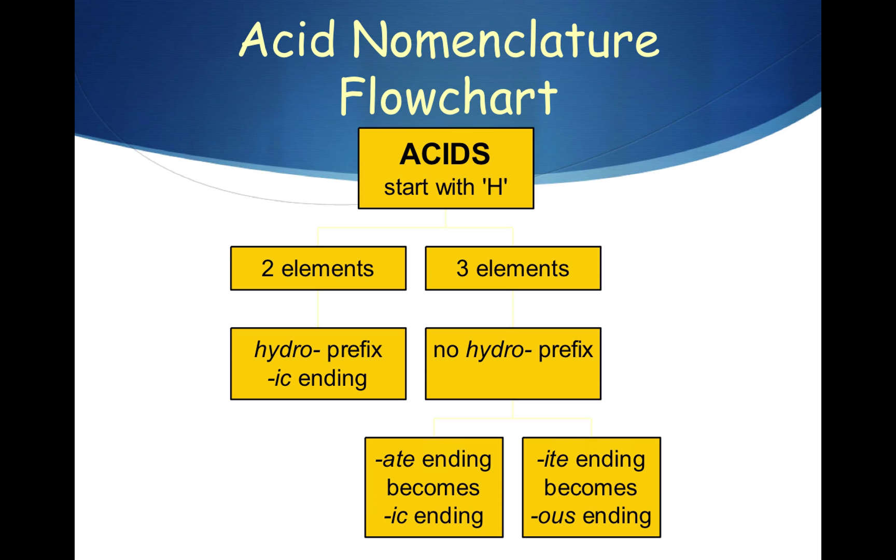Now, if the negative ion in the acid ends in -ate, then the -ate changes to -ic. That's how we get the names of acids such as sulfuric acid, nitric acid, phosphoric acid.